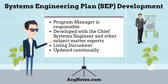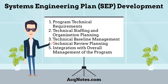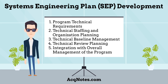Use the outline located on the ActNotes webpage to help with the development of your systems engineering plan. There are five areas that a systems engineering plan should address. The first area is Program Technical Requirements — the SEP should define how the program will manage all requirements: statutory, regulatory, derived, and certification.